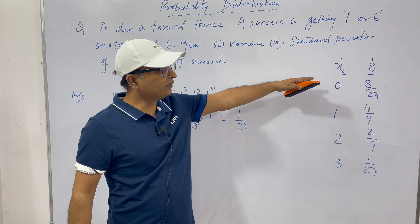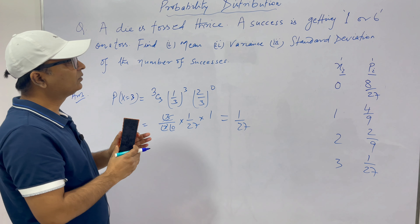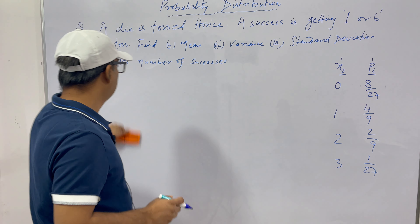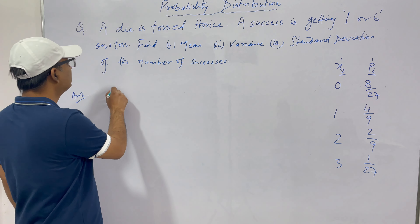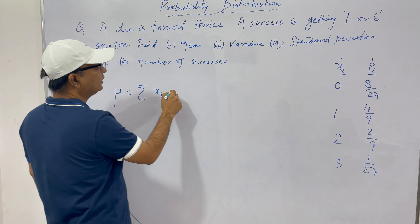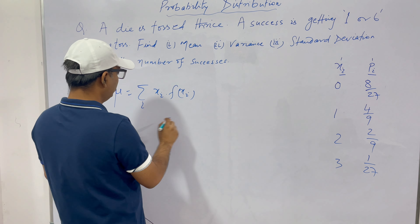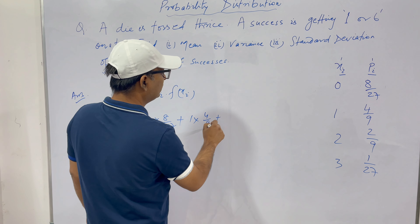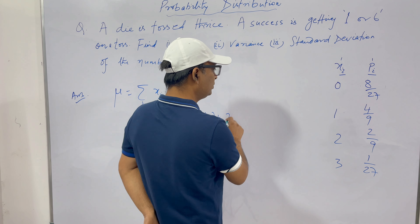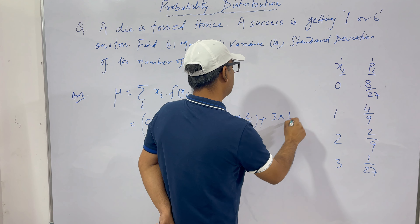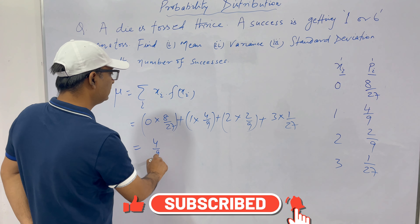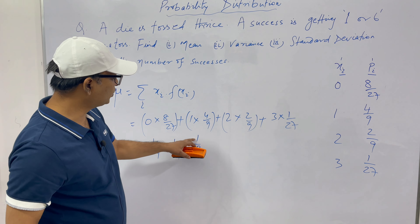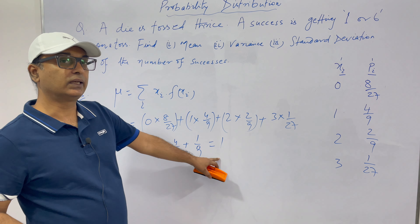We have created our discrete probability distribution. Now from this we can find the mean, variance, and standard deviation. Mean = Σ Xi × Pi. So: (0 × 8/27) + (1 × 4/9) + (2 × 2/9) + (3 × 1/27) = 0 + 4/9 + 4/9 + 3/9 = (4 + 4 + 1)/9 = 9/9 = 1. Our mean μ = 1.